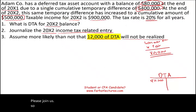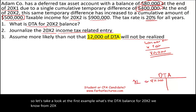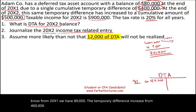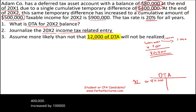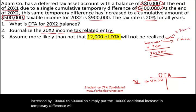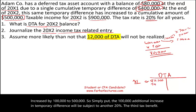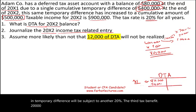Let's take a look at the first question: What is the DTA balance for 20x2? We know from 20x1 we have $80,000. The temporary difference increased from $400,000 by $100,000 to $500,000. That additional $100,000 increase in temporary difference will be subject to another 20% deferred tax benefit — $20,000. Therefore, the deferred tax asset as of X2 is $100,000.